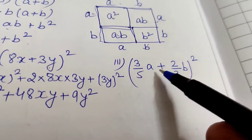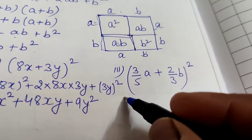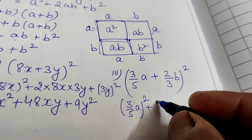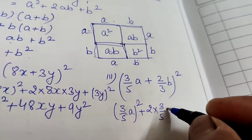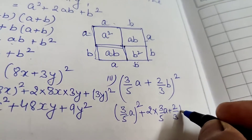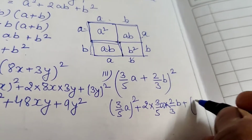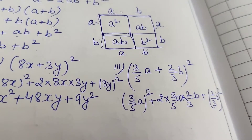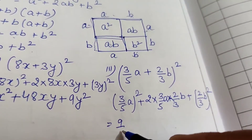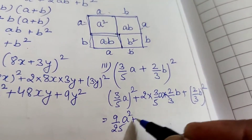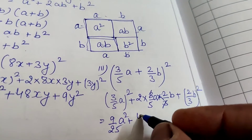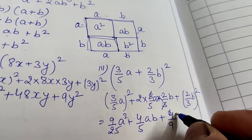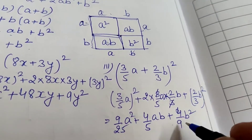The third question is (3/5·a + 2/3·b)². Square of the first number plus 2 times the product of the two numbers plus square of the second number. (3/5·a)² = 9/25·a². Then 2 × (3/5·a) × (2/3·b) = 4/5·ab. And (2/3·b)² = 4/9·b². So the answer is 9/25·a² + 4/5·ab + 4/9·b².